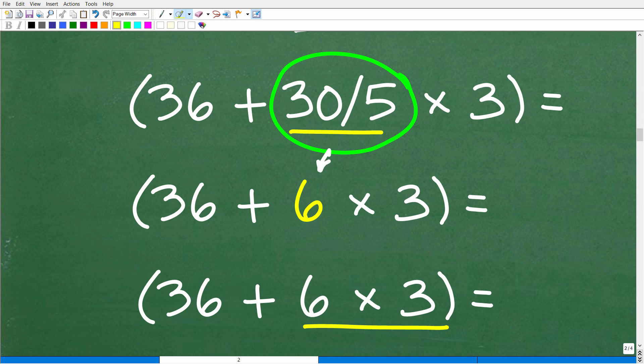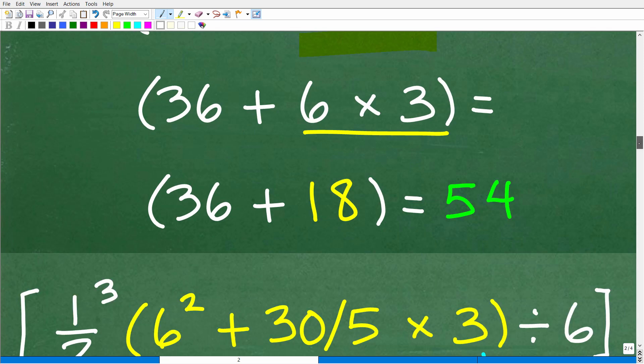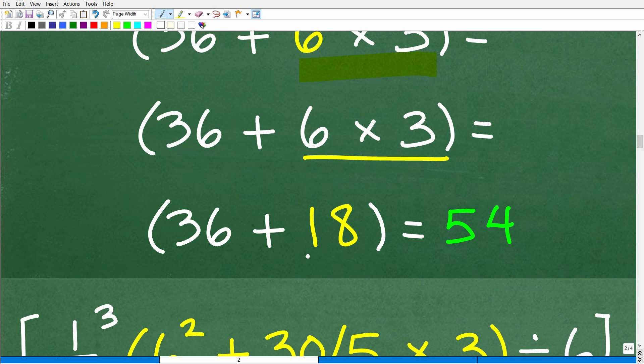So, let's go ahead and finish this up. So, we have 36 plus 30 divided by 5. Of course, it's 6 times 3. All right. So, we're down to addition and multiplication. So, the next step is going to be multiplication. That's always going to come before addition. So, 6 times 3, of course, is 18. So, now we have 36 plus 18. Now, here we are almost done with that parentheses step. So, our final answer here is 54.